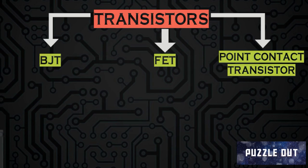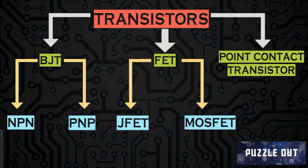The point contact transistor was the first type to be successfully demonstrated, but was replaced by BJT and MOSFETs due to its low efficiency. The BJT is classified as NPN and PNP transistors, whereas the FET is classified as JFET and MOSFET. We will look at each of them in detail in coming videos.